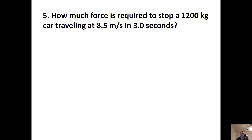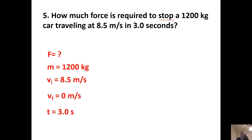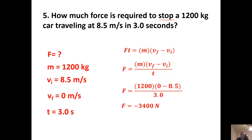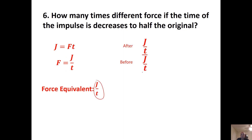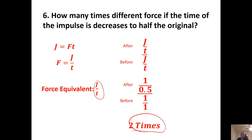How much force is required to stop a 1,200 kg car traveling at 8.5 m/s in 3 seconds? Variables: vf = 0, vi = 8.5 m/s, m = 1200 kg, t = 3 s. The answer is −3,400 newtons, or 3,400 newtons backwards. How many times different is force when the time of impulse is decreased by half? Rearrange F = J / t — with time at 0.5, the result is 2 times the original force.